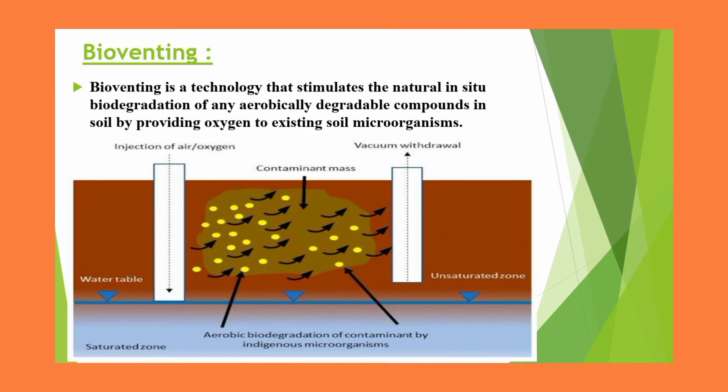What is bio-venting? Bio-venting is the technology that stimulates the natural in-situ biodegradation of aerobically degradable compounds in soil by providing oxygen to existing soil microorganisms.